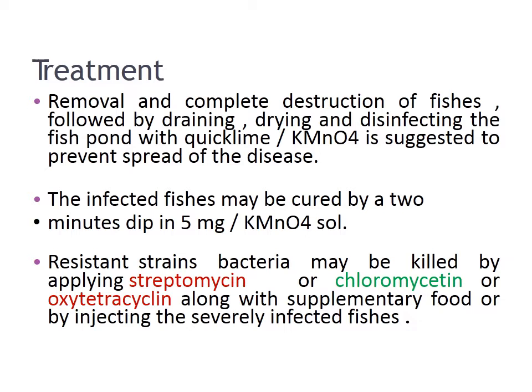Treatment of dropsy: removal and complete destruction of fishes, followed by draining, drying, and disinfecting the fish pond with quicklime or potassium permanganate, to prevent spread of the disease. Infected fishes may be cured by a two-minute dip in 5 mg/L potassium permanganate solution. Resistant strains of bacteria may be killed by applying streptomycin, chloromycetin, or oxytetracycline along with supplementary food, or by injecting severely infected fishes.